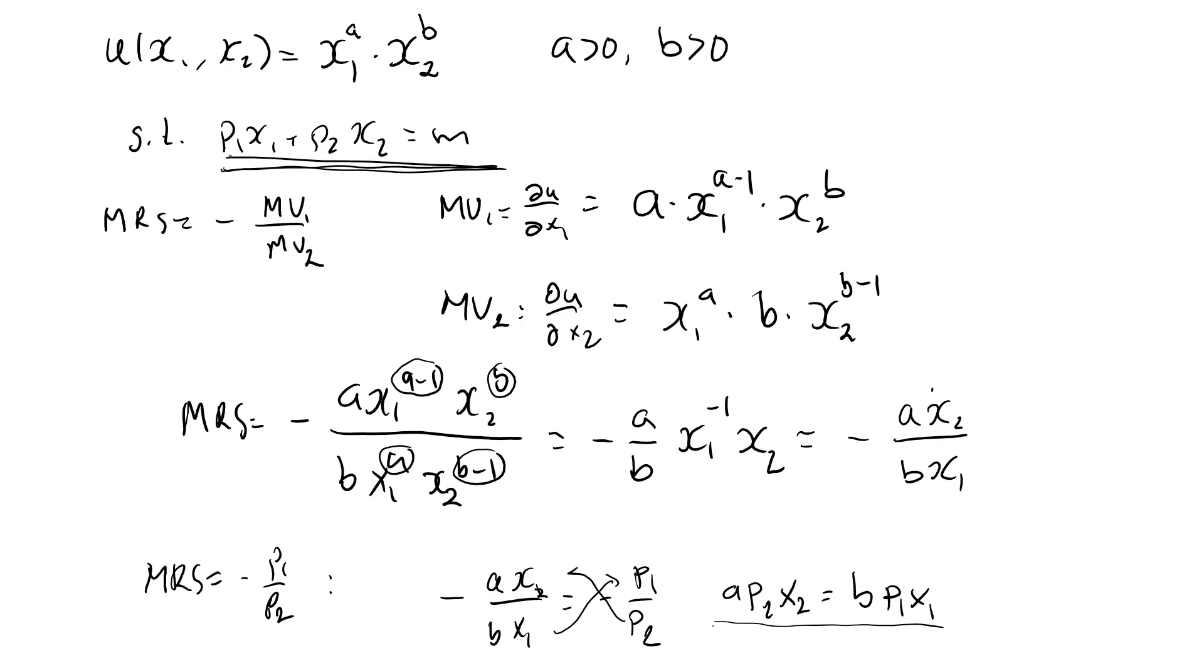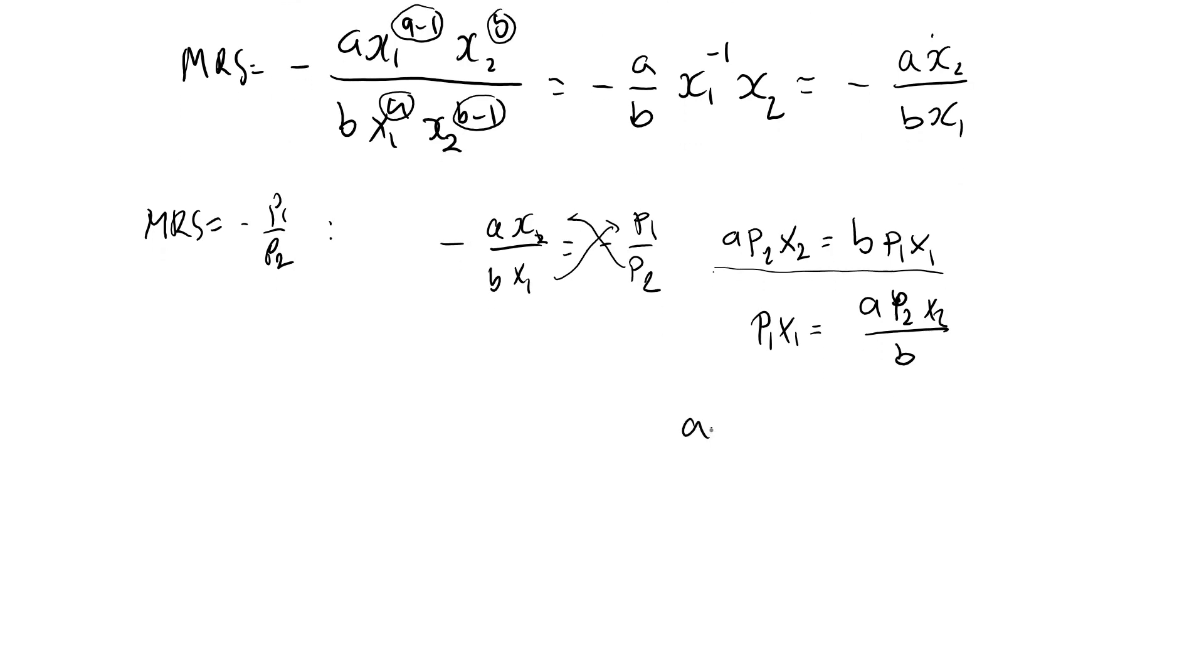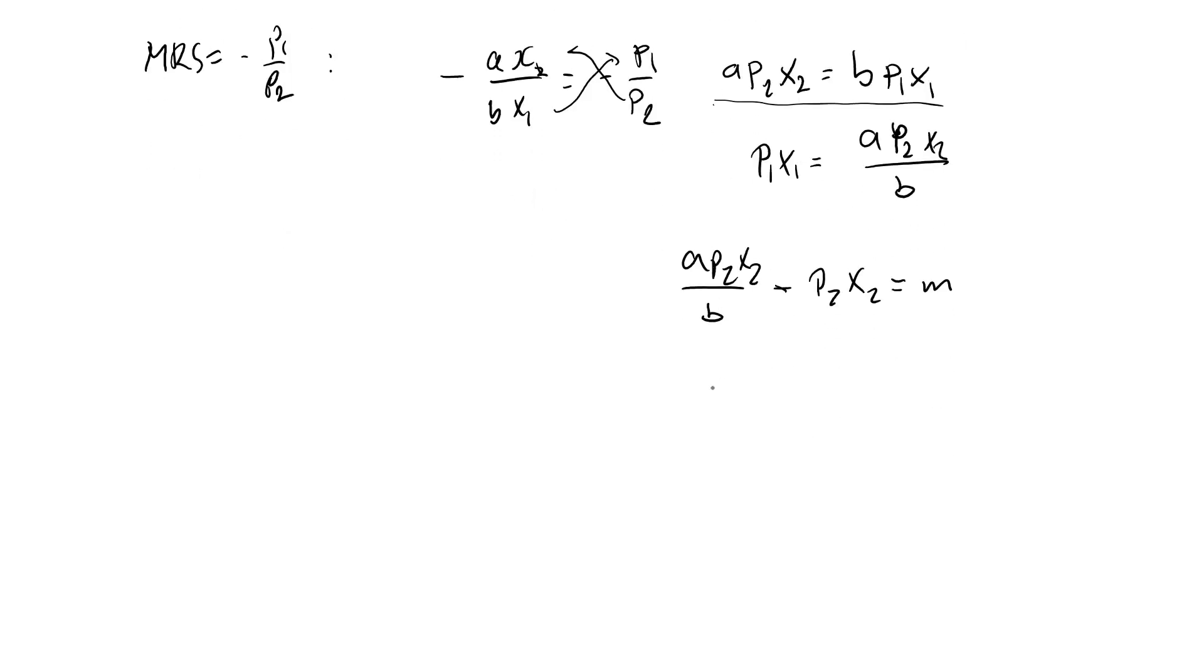We have a system of two linear equations, and you can solve this system any way you like. For example, if I divide both sides by b here, I have p1x1 equal to ap2x2 over b. If I plug this one into the budget constraint, p1x1, ap2x2 over b, plus p2x2 equal to m. Then I can factor p2x2, a over b plus 1 equal to m. This one is the same as b over b, so this part here is a plus b over b.